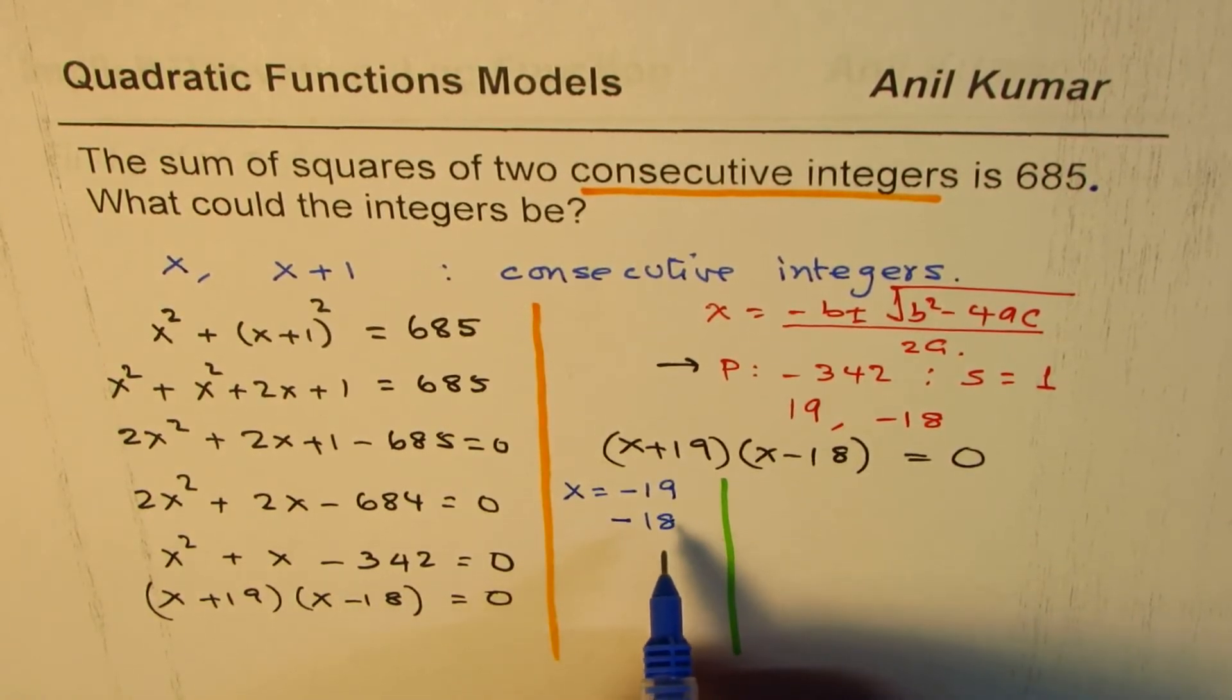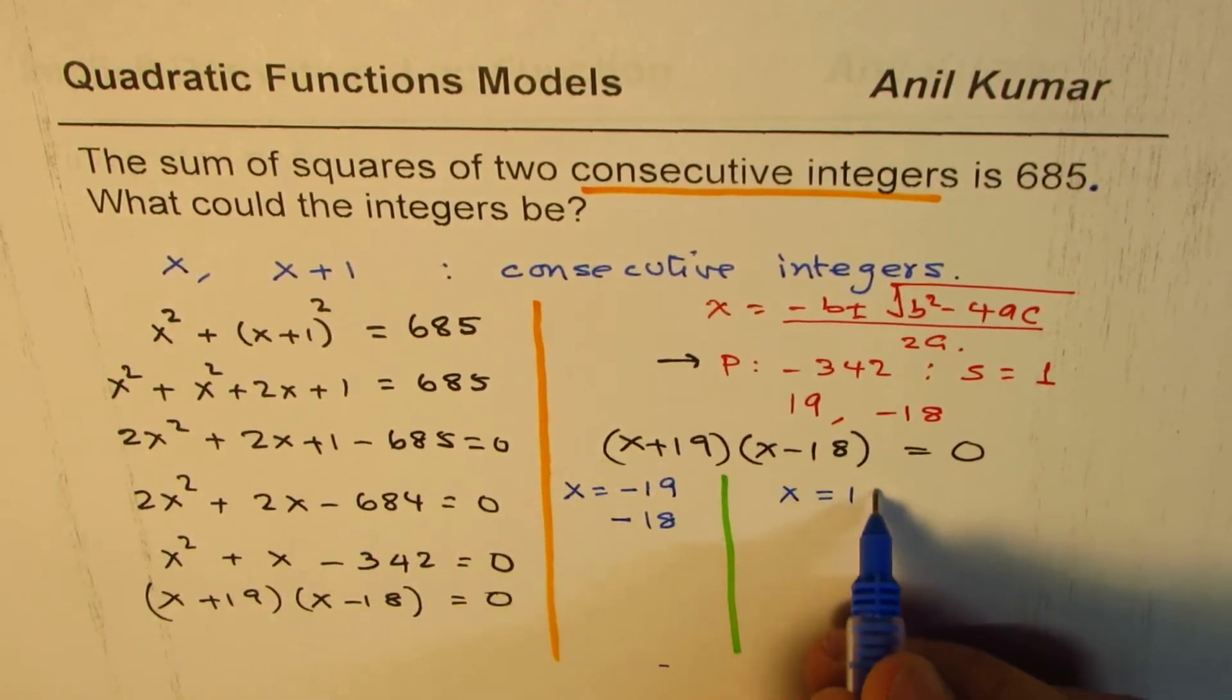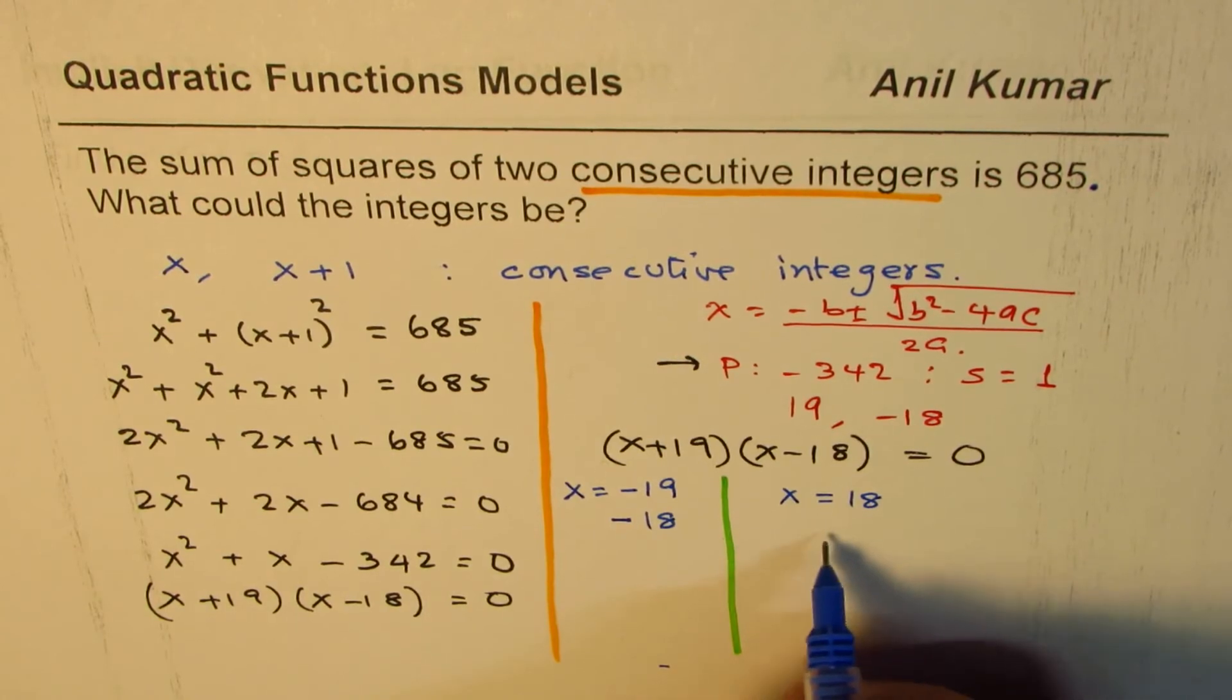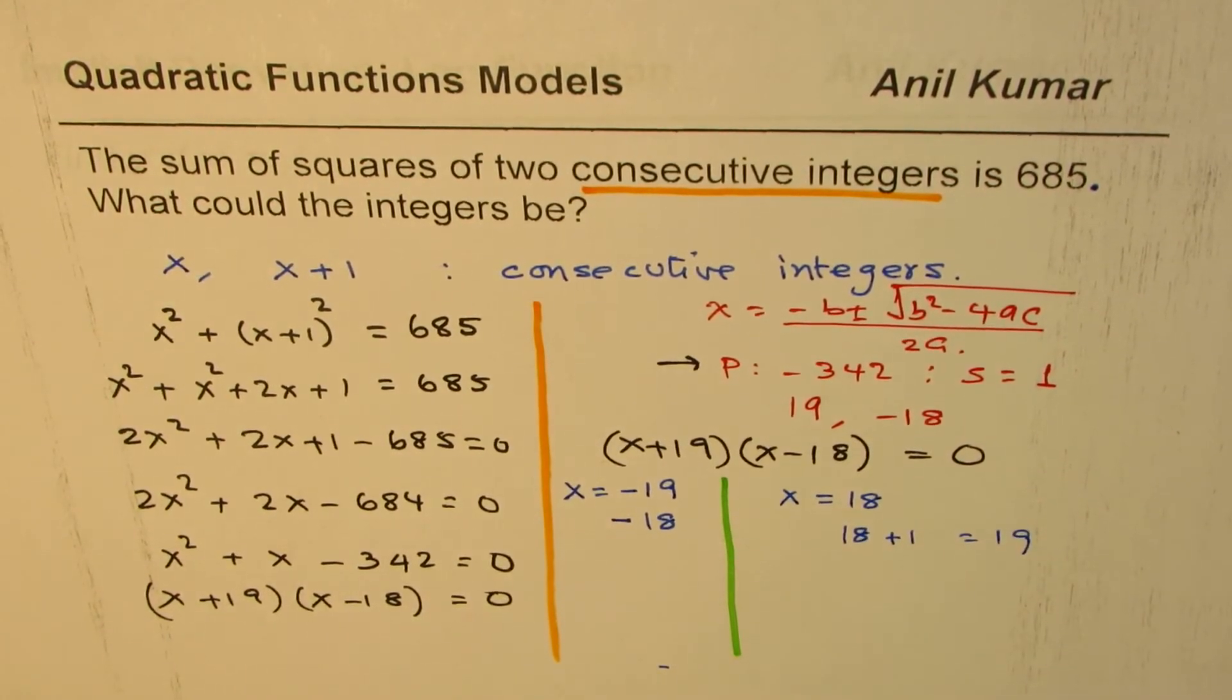So those two could be the solution. Or if you take this, x could be equals to plus 18. In that case, the other number will be 18 plus 1, which is 19. Do you see that?